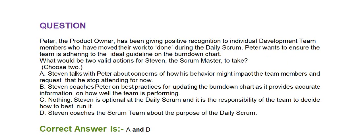Next question: Peter, the product owner, has been giving positive recognition to individual development team members who have moved their work to done during the daily scrum. Peter wants to ensure the team is adhering to the ideal guideline on the burn down chart. What would be two valid actions for Steven, the Scrum Master, to take? Choose two. Option A: Steven talks with Peter about concerns of how this behavior might impact the team members and requests that he stop attending for now.